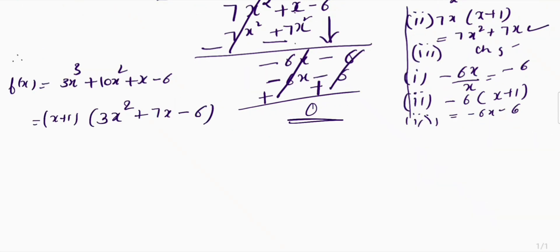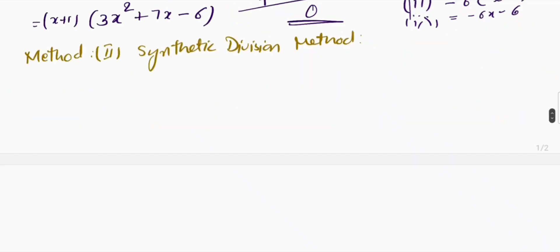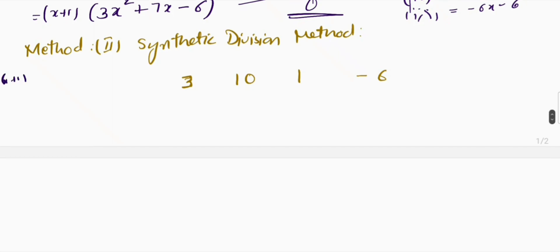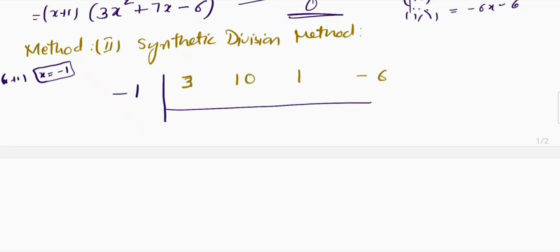We can also use Method 2, the synthetic division method, which is very important for competitive exams. First, write all the coefficients: 3, 10, 1, and −6. Since (x + 1) is a factor, x = −1 is the solution. Write −1 to the side and bring down the leading coefficient 3.